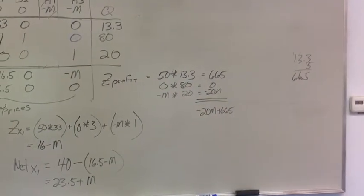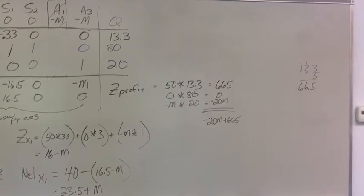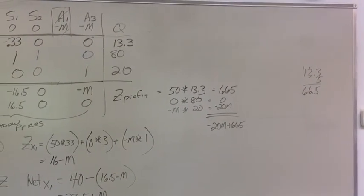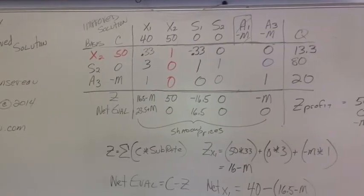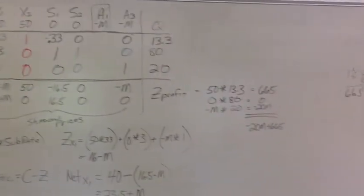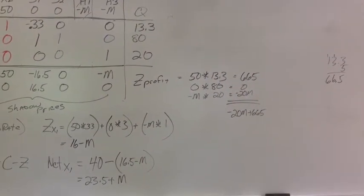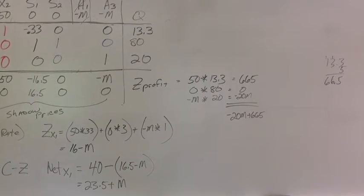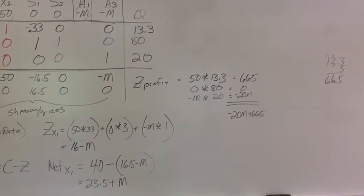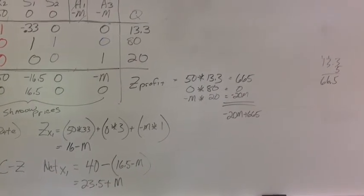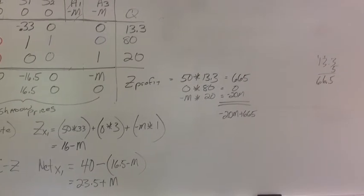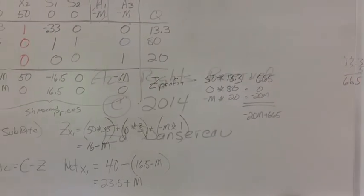Just to give you an idea, I calculated the profit, which again is the summation of the c in the basis times q. So c times q. So 50 times 13.3, 0 times 80, negative m times 20. So we're still losing money. We're still down $20 million or so. All right. That's it till next time.